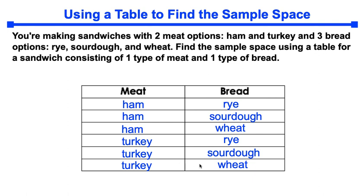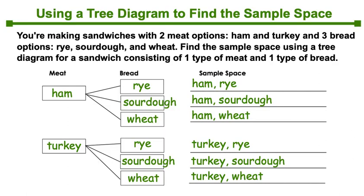The last option to display sample space is through a tree diagram. Let's check that out. This is the same information. So in the first column here we have our proteins, we have ham and we have turkey. In the next column we have our choices of breads, so we have rye, sourdough, and wheat. So we're connecting our protein ham with every single bread option. And then on the far right that is where we write our sample space.